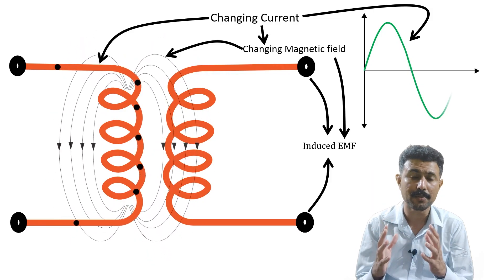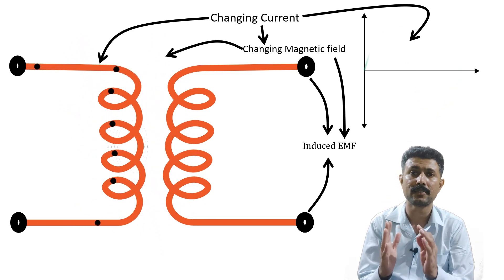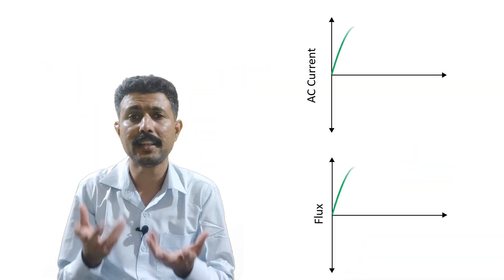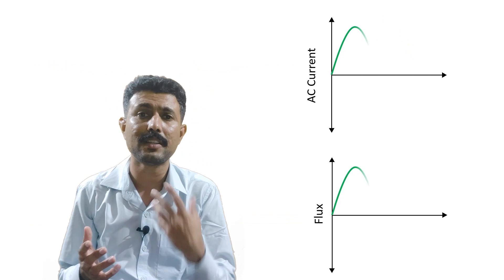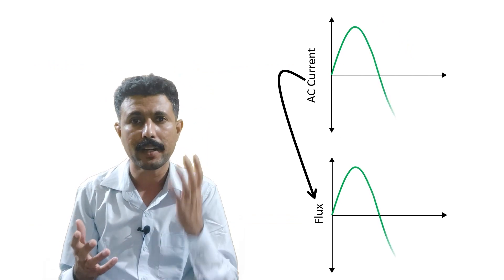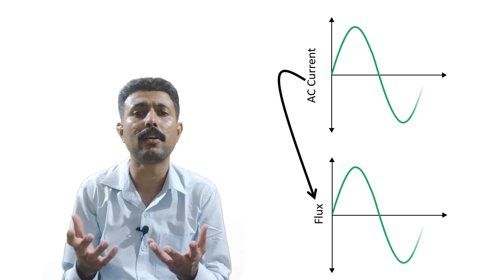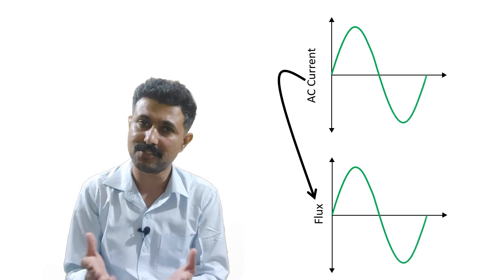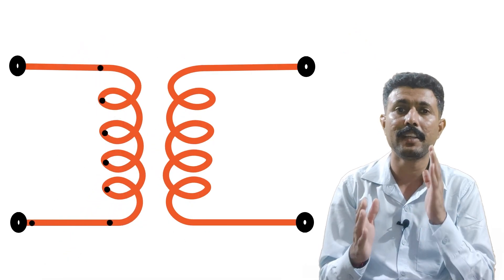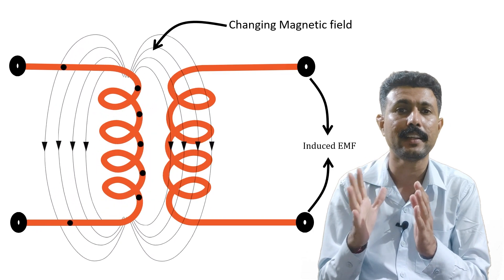To get induced EMF in the secondary coil we must have a changing magnetic field. When we give AC supply, the nature of AC is continuously alternating — the magnitude of current is continuously changing. So by default the magnitude of flux produced by that current will also be continuously changing, giving us a changing magnetic field directly. That is why when we give AC supply to a transformer, it induces EMF in the secondary coil.